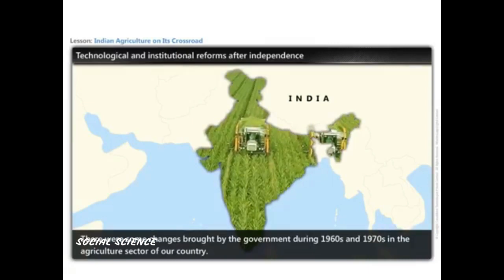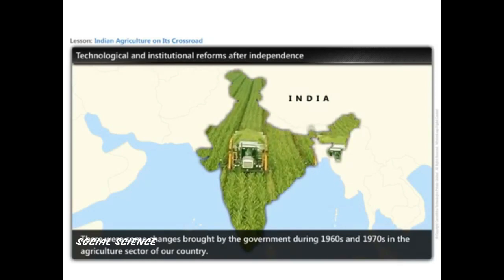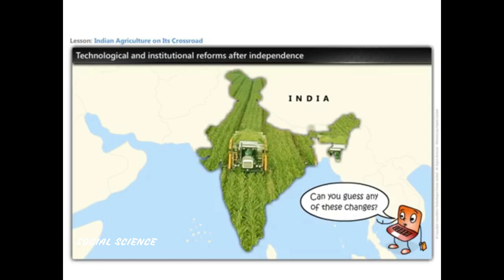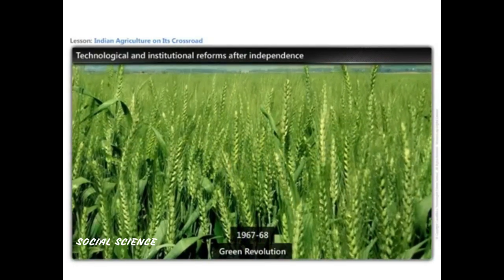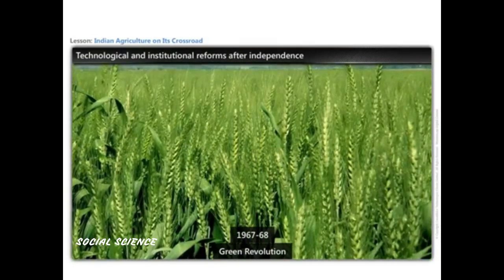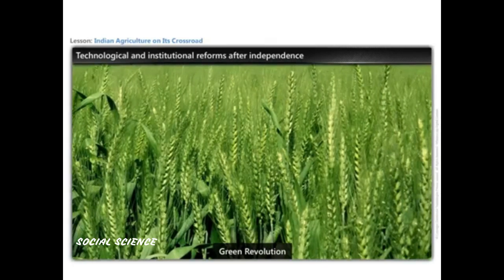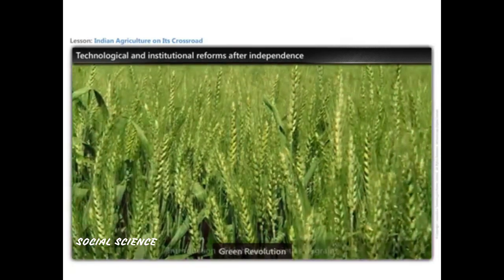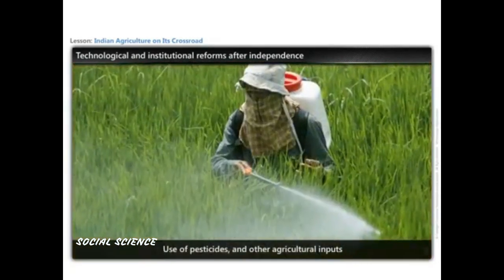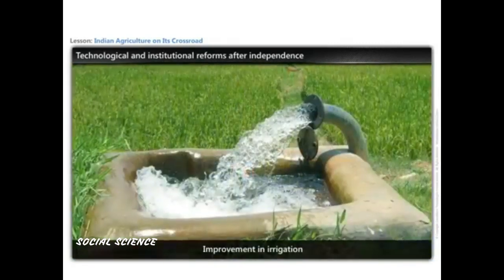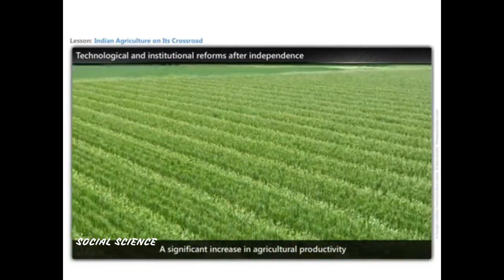During the 1960s and 1970s, the government brought significant changes to the agricultural sector. The Green Revolution, starting from 1967-68, changed India's status from a food-deficient country to one of the world's leading agricultural nations. Changes brought through the Green Revolution include introduction of high-yield varieties of grains, use of pesticides and other agricultural inputs, improvement in irrigation, improved management techniques, and a significant increase in agricultural productivity.